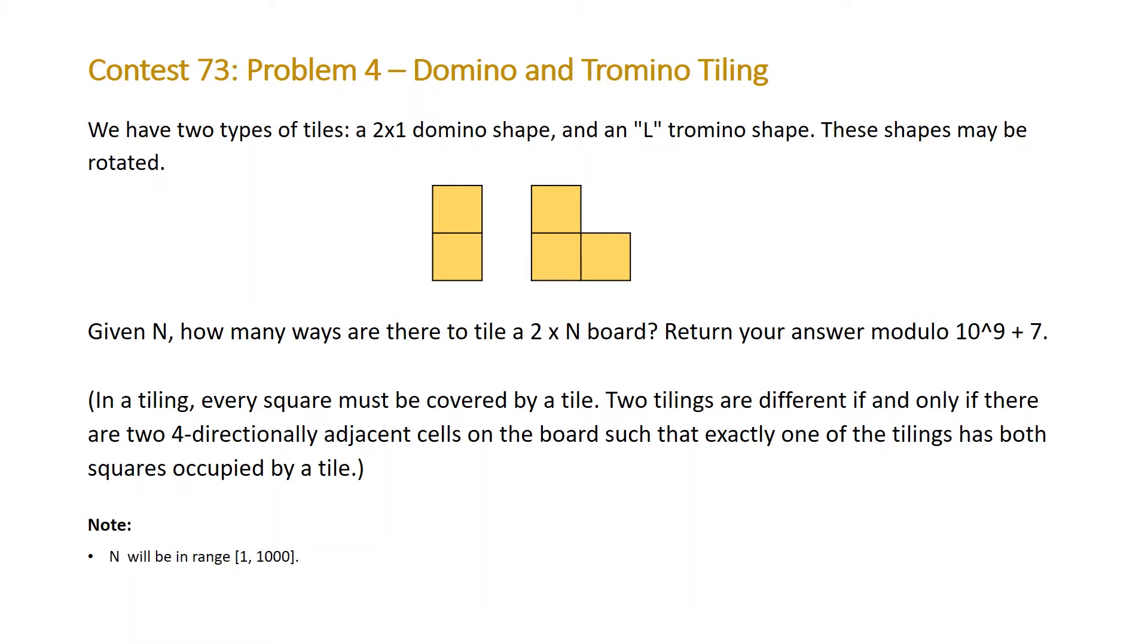So this basically means that every tile in your 2 by n board has to be covered and it can only be covered by either a domino or a tromino tile, not two or more tiles. And note that n will be in the range 1 to 1000.